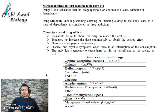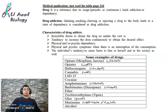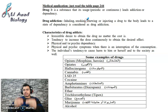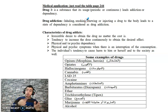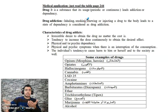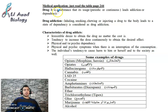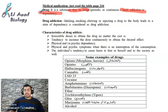First of all, if I want to define a drug: a drug is a chemical substance — all drugs are chemical substances — where its periodic or continuous usage leads to addiction. Any substance whose usage leads to addiction or dependency is called a drug.